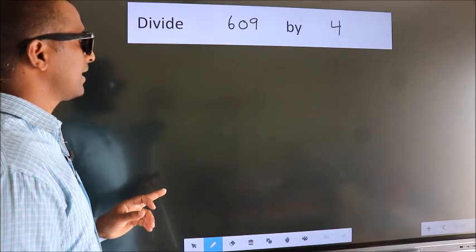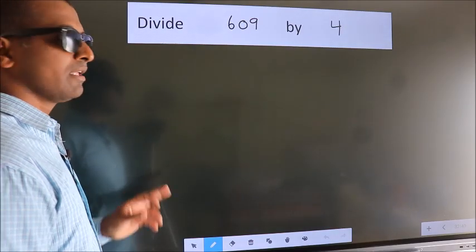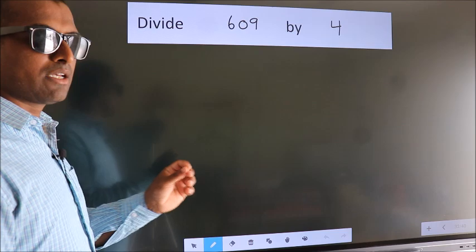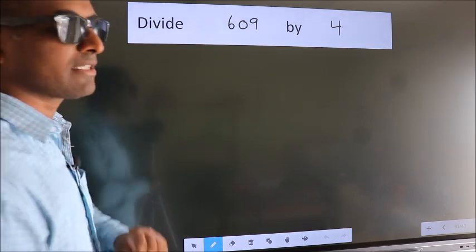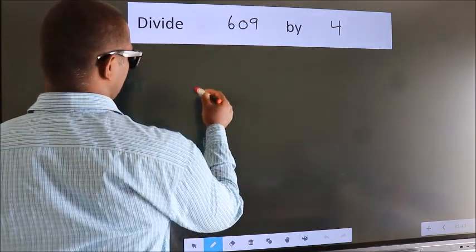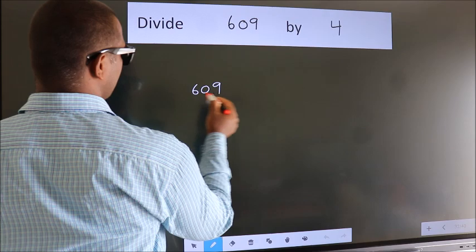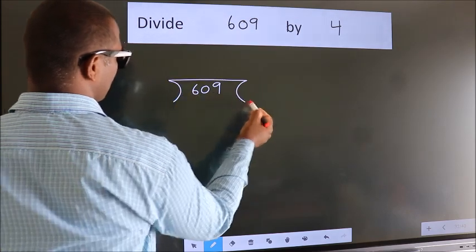Divide 609 by 4. To do this division, we should frame it in this way: 609 here, 4 here.